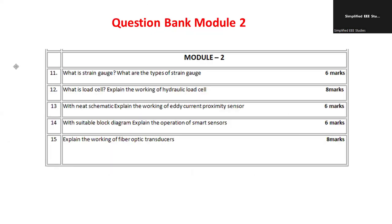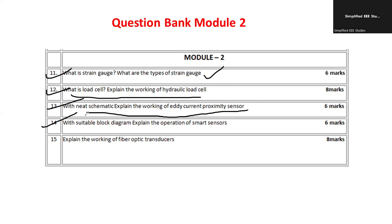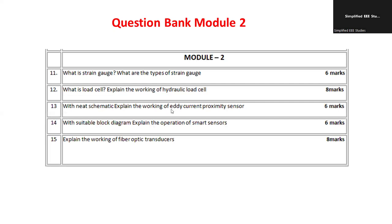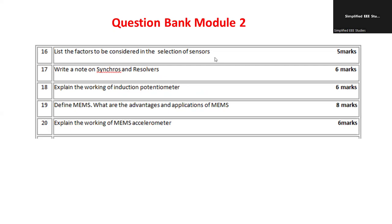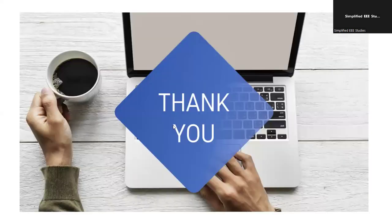Additional probable questions to prepare: what is a strain gauge and what are its types? What is a load cell — explain its working and types. Explain the eddy current proximity sensor with a schematic diagram. Explain the operation of smart sensors with a suitable block diagram — a smart sensor can measure multiple types of quantities using a single sensor. Explain the working of fiber optic transducers — total internal reflection is the basic principle. Also cover: factors for sensor selection, synchros and resolvers, induction potentiometer, MEMS, and MEMS accelerometer.